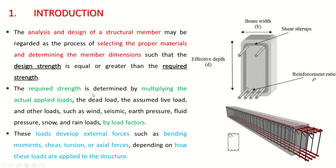The required strength, which is the demand, is determined by multiplying the actual applied loads — dead load, live load, and other loads such as wind, seismic, earth pressure, fluid pressure, snow, and rain loads — by a load factor that should be greater than or equal to one. These loads develop external forces such as bending moments, shear force, torsion, or axial forces. For columns, the primary forces are axial; for beams, the primary forces are shear and moment.